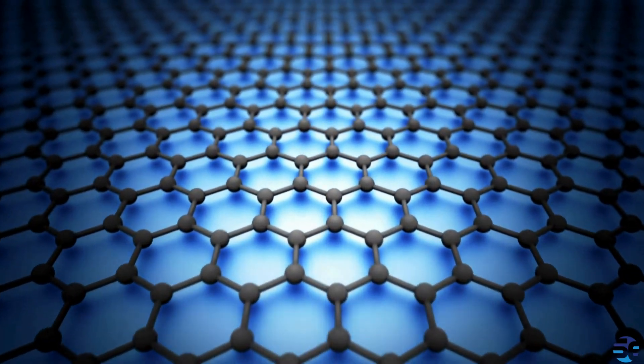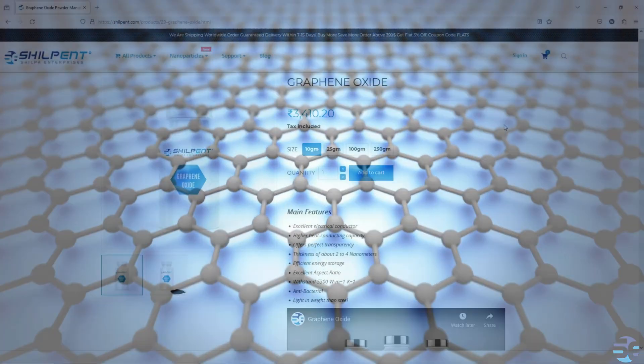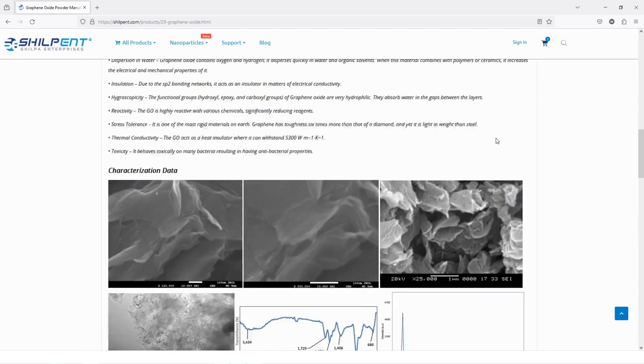Before we check out more about graphene oxide, you can order this product from our official website, Shilpent. Link is given in the description.